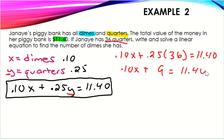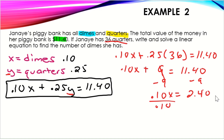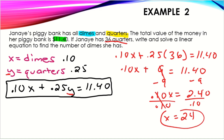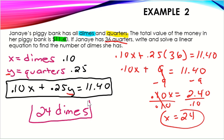Using the two-step equation, subtract 9 from both sides: 0.10x = 2.40. Dividing both sides by 0.10, X equals 24. So she has a total of 24 dimes. If you were given the number of dimes and needed to find quarters, you would plug that in for X and solve for Y. But here we're looking for dimes, so X equals 24 dimes.